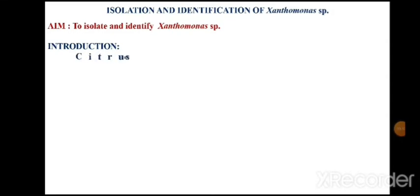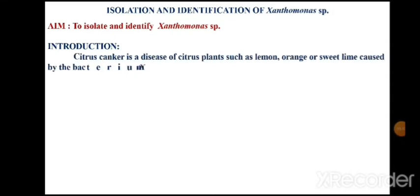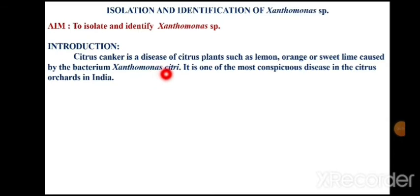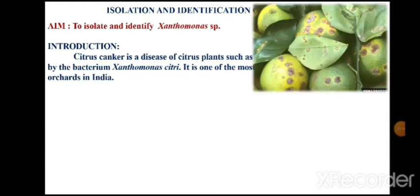Xanthomonas is responsible for several plant diseases. One of them is Xanthomonas citri, which is responsible for a disease called citrus canker. It is a disease of citrus plants such as lemon, orange, and sweet lime, caused by Xanthomonas citri bacteria. It is one of the conspicuous diseases in the citrus orchards in India. These are the symptoms of citrus canker caused by Xanthomonas citri on lemon fruits.